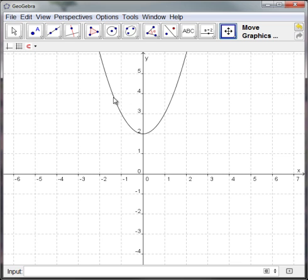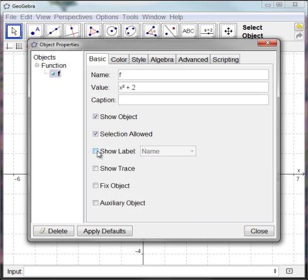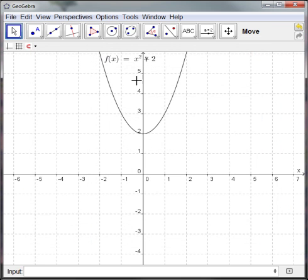Now, I can give a label to this by right-clicking, going to Object Properties, and saying Show Label. And I'm going to show both the name and the value. And you can see it's given me a nice label for that.